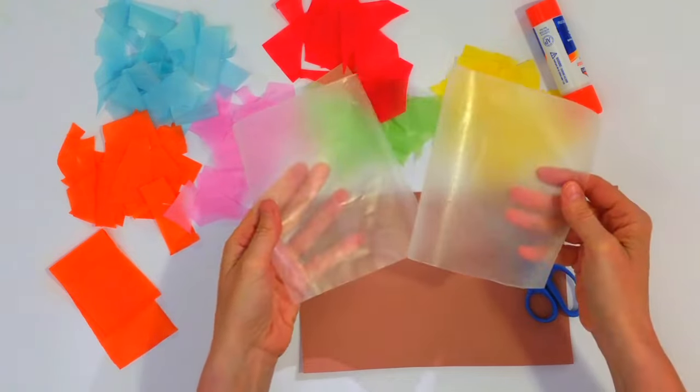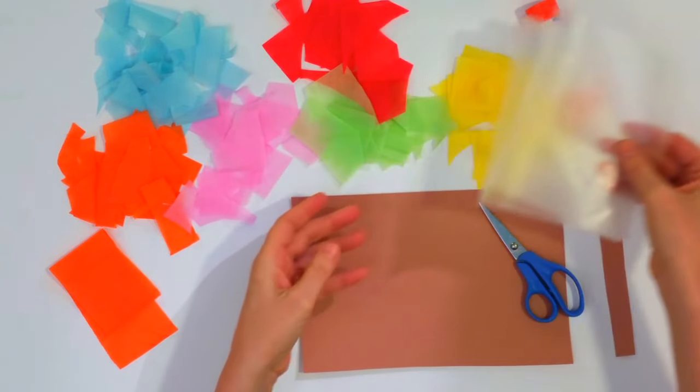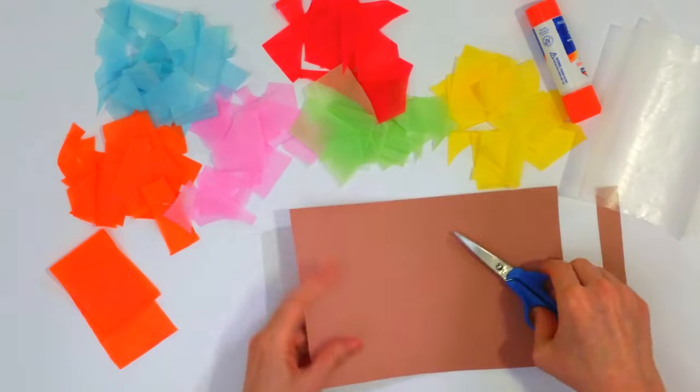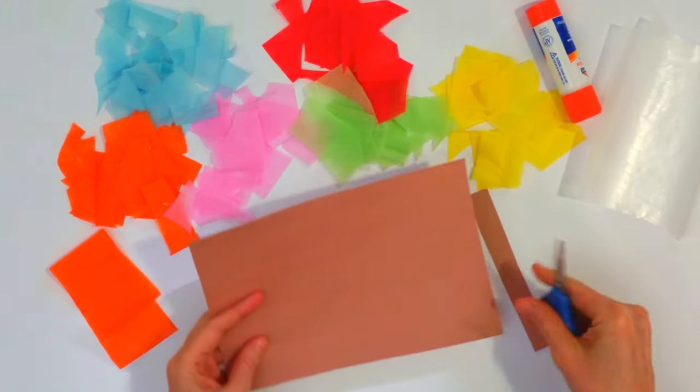You're going to need two pieces of wax paper at the same size, some brown construction paper, scissors, glue stick, and colored tissue paper.